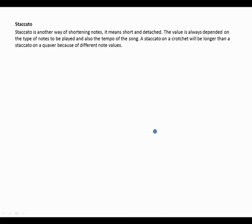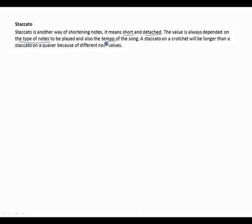Let's take a look at staccato. Staccato is another way of shortening notes — it means short and detached. The value is always dependent on the type of notes to be played and also the tempo of the song. A staccato on a crotchet will be longer than a staccato on a quaver because of the difference in note value.